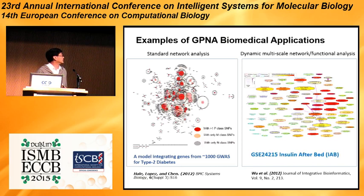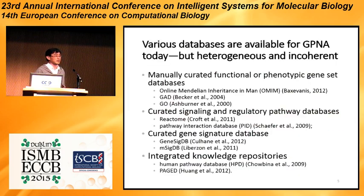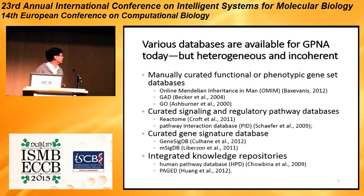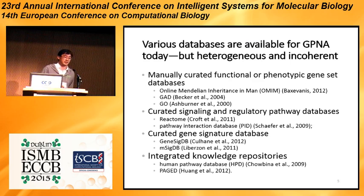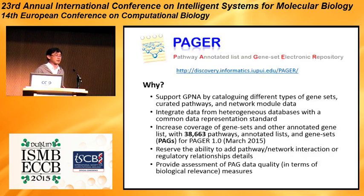The more complicated study allows temporal analysis. For a study like this, we are actually pretty deficient on tools. To do a GPNA analysis, you need to go to many different kinds of databases, and some of them are quite incoherent. Some of the databases are OMIM, GAD, and gene ontology — they provide more functional information and are manually curated. Or you can go to pathway databases like Reactome or CAG, or a gene signature database, or some integrated knowledge repositories. In any case, it's very inconvenient.